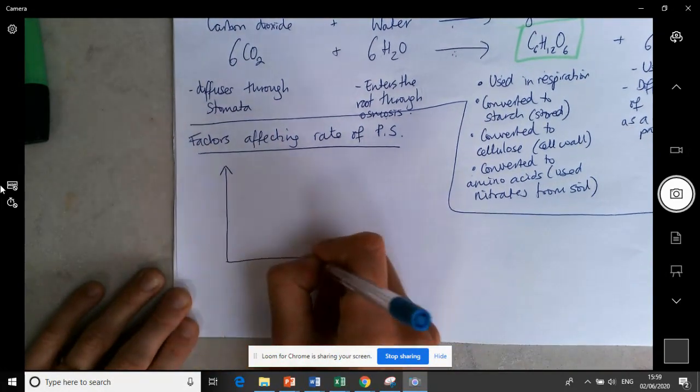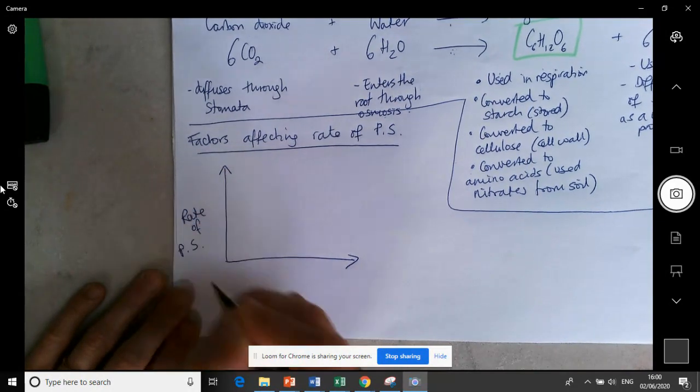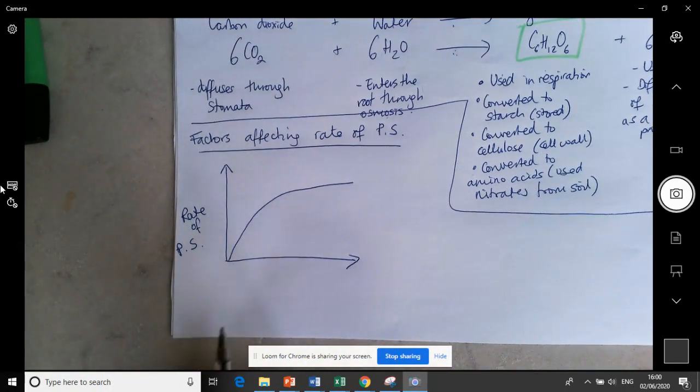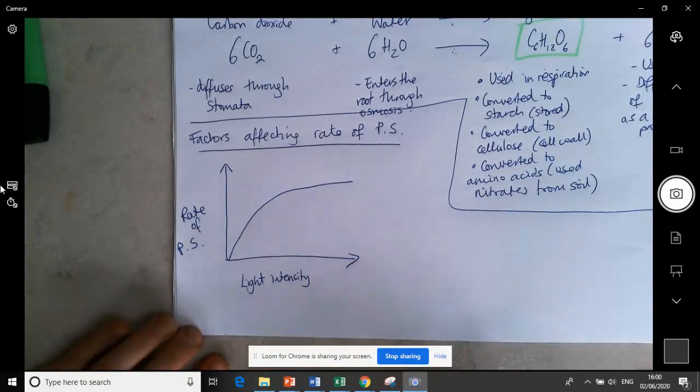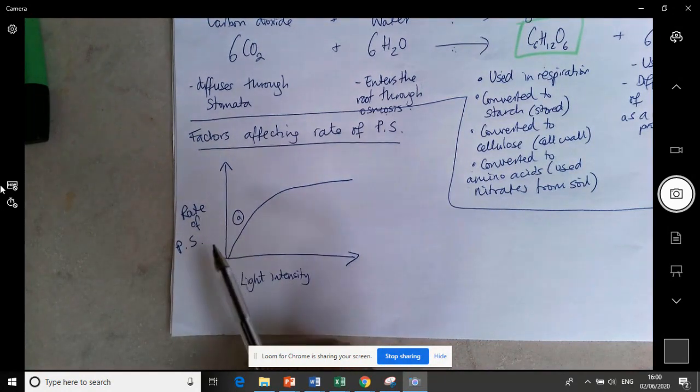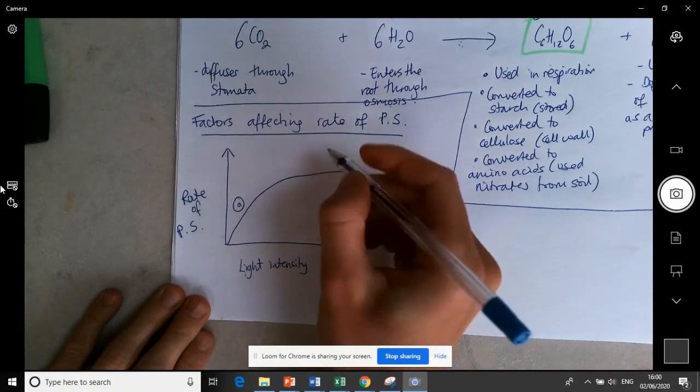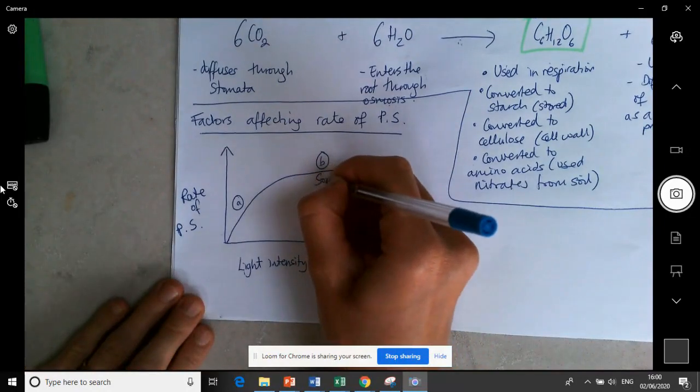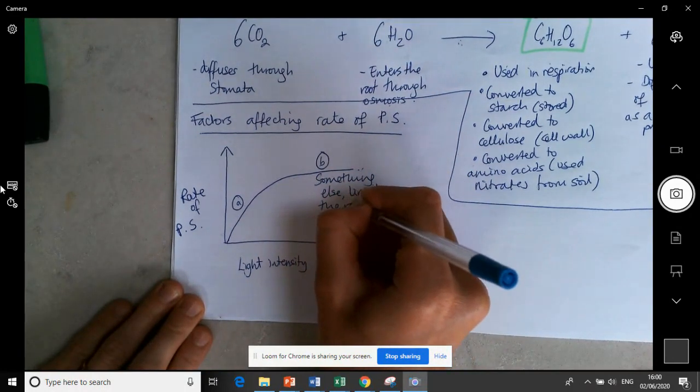There's one graph that we can draw which has got the rate of photosynthesis on the y-axis. There's a whole range of things that we can put on our x-axis but I'm going to start just by putting light intensity. We can see here at point A that as light intensity increases the rate of photosynthesis is increasing. But eventually at B that line is leveling off or plateauing.